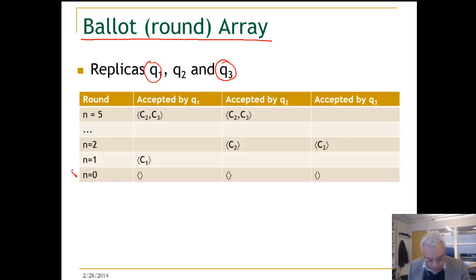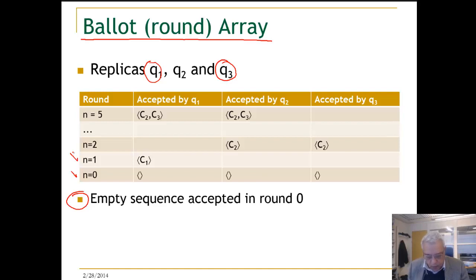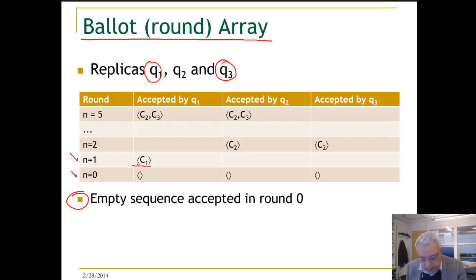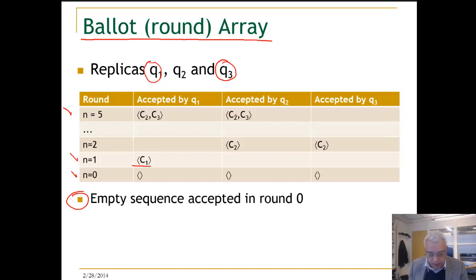Row 0 is where the empty sequence is initially accepted by all acceptors. Row 1 is where acceptor Q1 accepted a sequence with only C1, while acceptors Q2 and Q3 did not accept anything. Here is a situation where acceptor Q1 accepted the sequence C2, C3, and acceptor Q2 also accepted the sequence C2, C3. Now we know what a ballot array is.